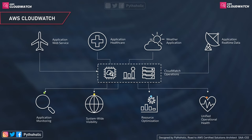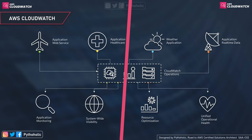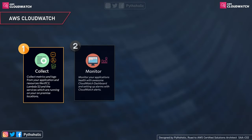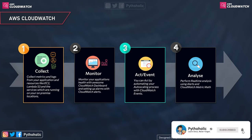For resource optimization, you can auto scale instances when there is peak CPU utilization over 95% by triggering events to increase the number of instances, and reduce them when utilization decreases. These things help the system achieve unified operational health by making sure you have alerts and notifications in place based on the events you wish to trigger. For example, if you've created an alert, you can send a notification to an SNS topic and get notified on your phone or email. So when you think of implementing CloudWatch, remember these four pillars: Collect, Monitor, Act, and Analyze.